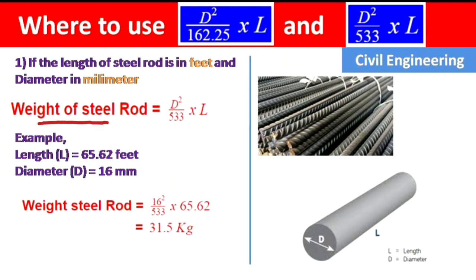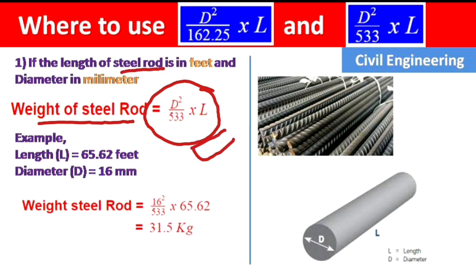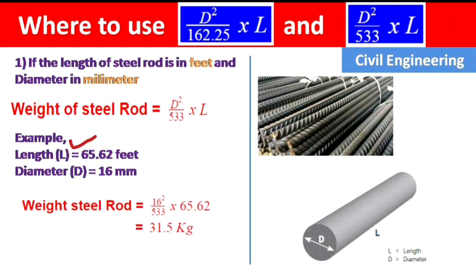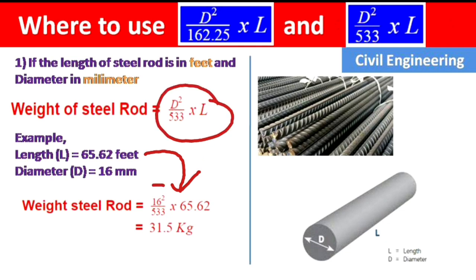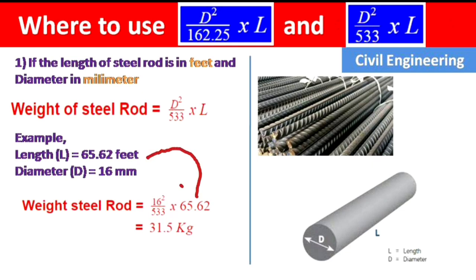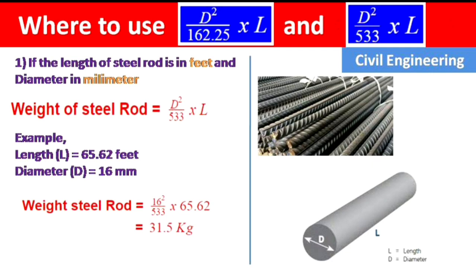The second formula — d² / 533 × L — is used when the length of the steel rod is in feet and the diameter is in millimeters. For example, the length is 65.62 feet and the diameter is 16 mm. Putting these values in: 16² / 533 × 65.62.